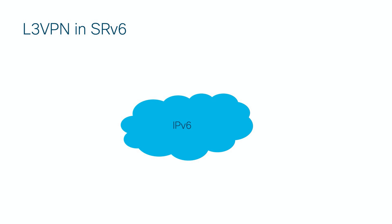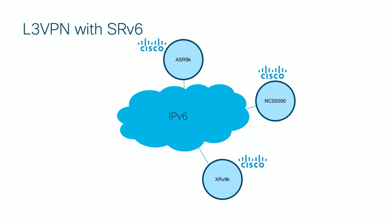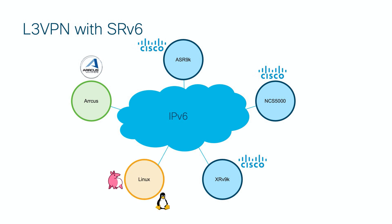Our topology is quite simple. We have an IPv6 network with some IGP protocol and several PE routers connected to it. Three platforms are from the Cisco portfolio: custom silicon-based ASR 9000, Jericho-based NCS 5500, and virtual router XRv9k. We also have an Arcus router running ArcOS, which is based on Jericho 2, and a Linux server running an open-source BGP implementation written in Go, called GoBGP.